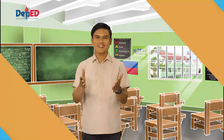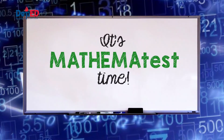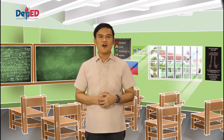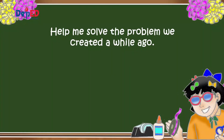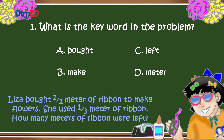For our final activity, it's Mati Mati time! Get a piece of paper or notebook, write numbers 1 to 5, and choose the letter of the best answer. Help solve the problem: Liza bought one-half meter of ribbon to make flowers. She used one-third meter of it. How many meters of ribbon were left? Number 1: What is the keyword in the problem? A. Bought, B. Make, C. Left, D. Meter.